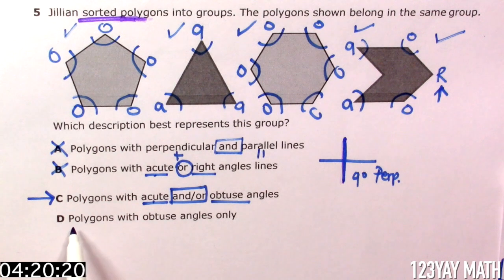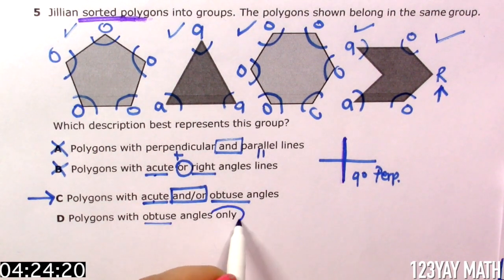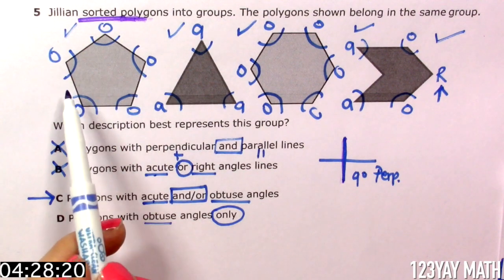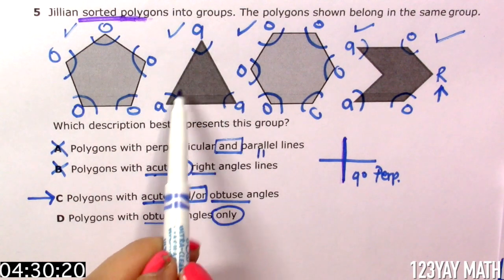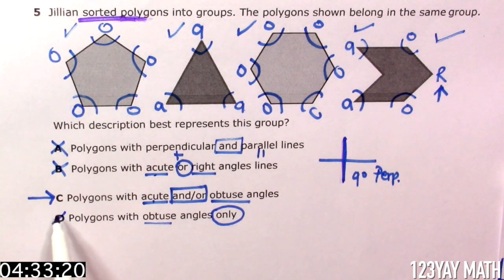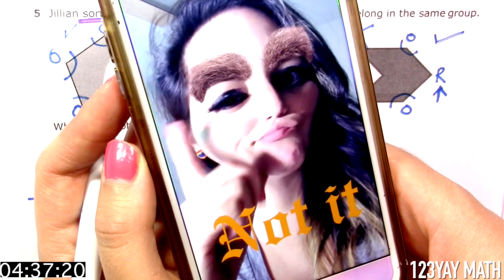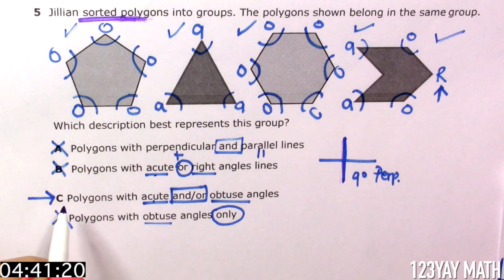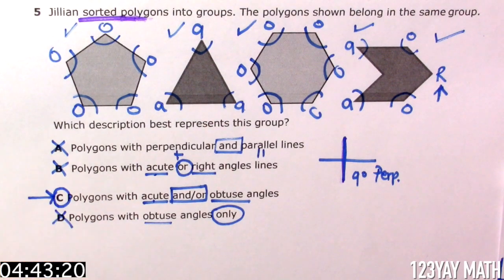Let's check D. It says polygons with obtuse angles only. Does this one have obtuse angles only? Yes. Does this one have obtuse angles only? Definitely not. So is this the right answer? This looks hairy. I think it's not the right answer. So yes. C is the correct answer.